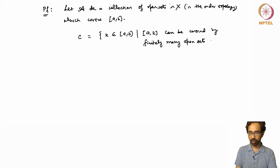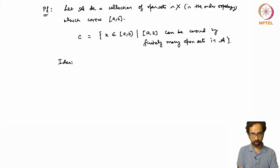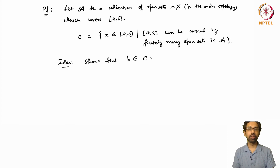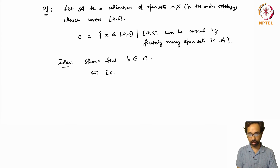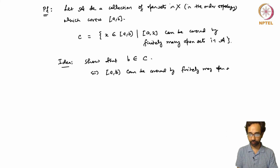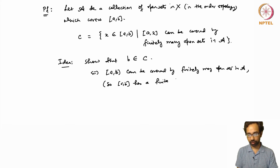The idea is to show that B itself belongs to this set C. This is equivalent to saying that [A, B] can be covered by finitely many open sets in A, which means [A, B] has a finite subcover from A.